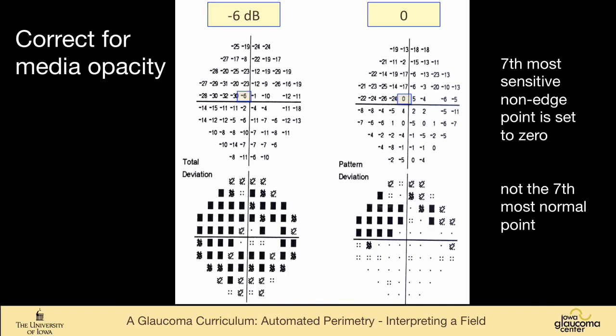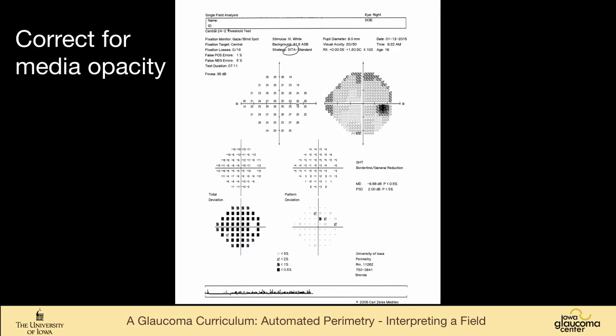The main function of this is to correct for media opacity. So if you have a field like this on the left, the total deviation is all depressed because this patient has cataract and glaucoma. So what the perimeter does is selects the seventh most sensitive point and sets that point as the zero point, which in this case is six decibels below normal for age. This is the seventh most sensitive non-edge point. It's not the seventh most normal point, seventh most sensitive.